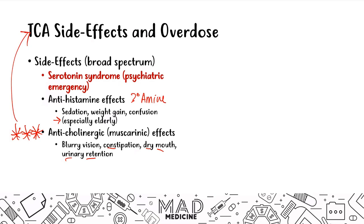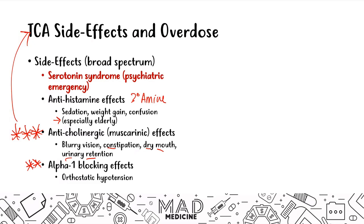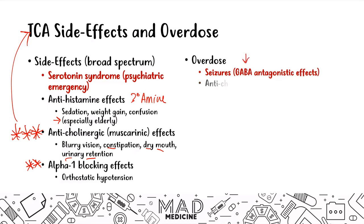The last major side effect is alpha-1 blocking effects, which present with orthostatic hypotension. So if someone presents with blurry vision, constipation, urinary retention, and fainting upon standing, think TCA side effects. In overdose, TCAs can cause seizures because they have GABA antagonistic effects. You'll also see anticholinergic muscarinic effects such as hyperthermia, flushing, miosis, and ileus.